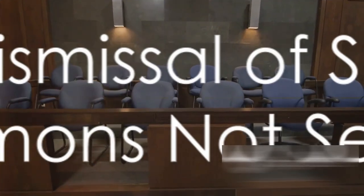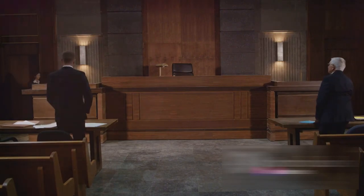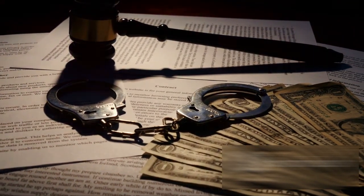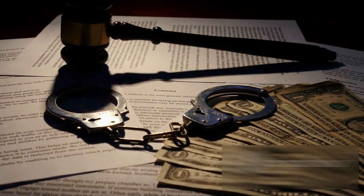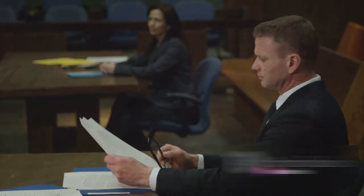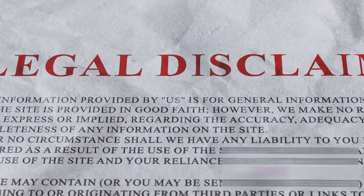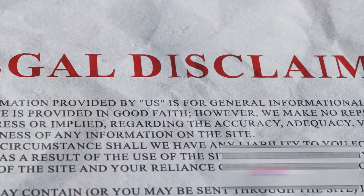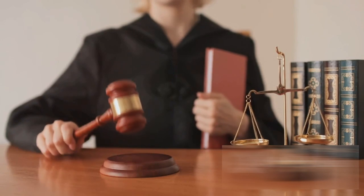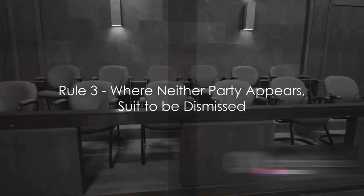Rule 2 of Order 9 states that if the summons has not been served, the court may dismiss the suit. This comes down to the plaintiff — if they've failed to pay the necessary court fee or postal charges, or haven't presented copies of the plaint as required by Rule 9 of Order 7, the summons won't be served. For example, if Jane Doe files a suit against John Doe but doesn't pay the court fee or present the necessary copies, John never receives the summons and the court has the power to dismiss the suit.